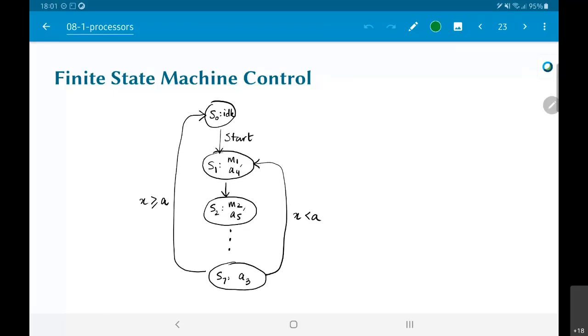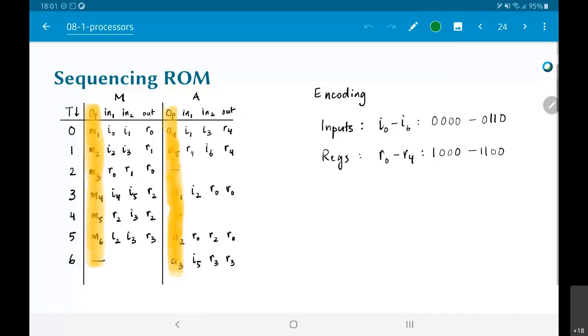So, the question that might come up is, is this the only way that it can be done? Is there a different way in which I could go about controlling this entire hardware? One method that is slightly complicated but has immense benefits if you go through with it is the use of something called a sequencing ROM, and I am going to basically work through this example once again and say, what does it mean to talk about a sequencing ROM?